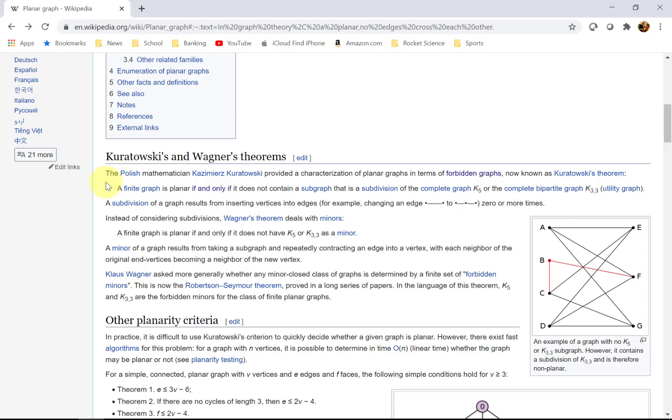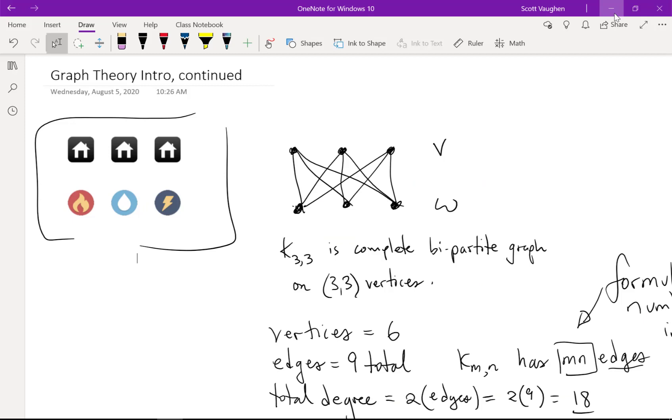And, Kuratowski's theorem says a finite graph is planar if and only if it does not contain a subgraph that's a subdivision of the complete graph K5 or the complete bipartite graph K33. So, basically, these graphs that we've been looking at, finite graphs, they will be planar if and only if they do not contain K5 or K33 within them. So, pretty amazing. These two graphs are sort of fundamental to this topic of whether a graph is planar or not.